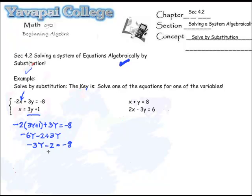And of course, then I just add 2, and I wind up with negative 3y is equal to, is that negative 6? That's right. Be careful. Negative 8 plus 2. And then the last step is divide by negative 3, and I wind up with y is equal to positive 2.